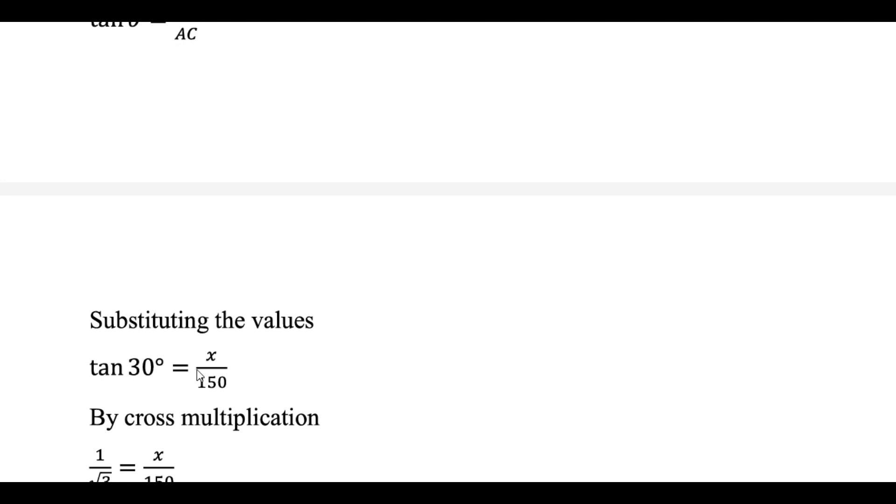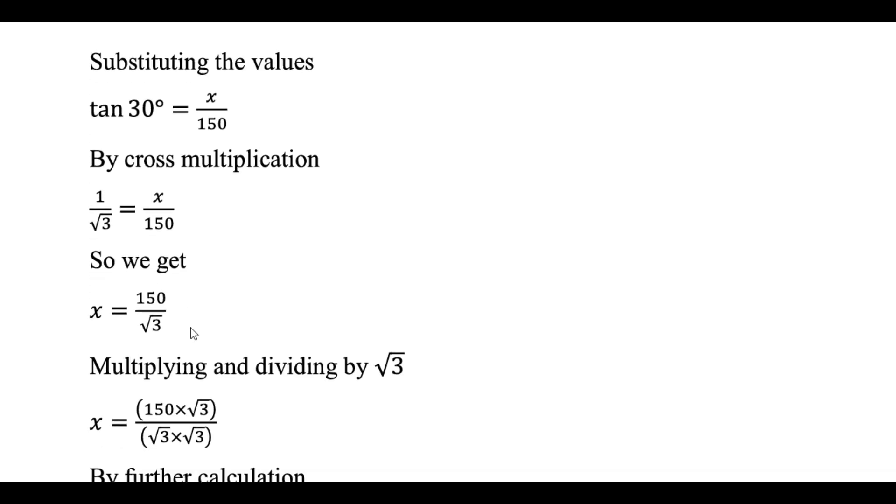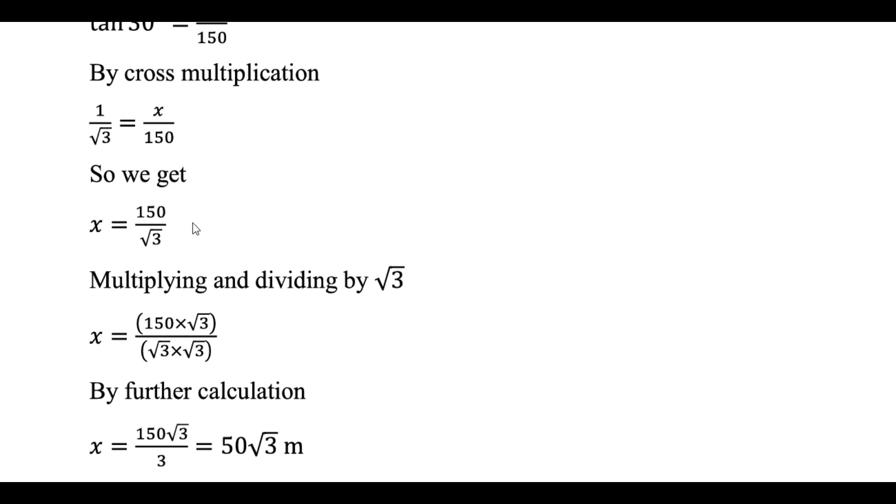So put tan 30 degrees equals x by 150. As we know that tan 30 degrees equals 1 by root 3, so 1 by root 3 equals x divided by 150.